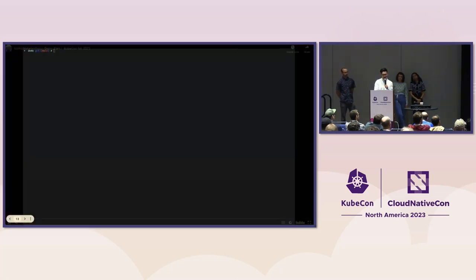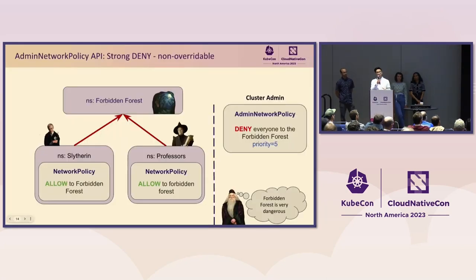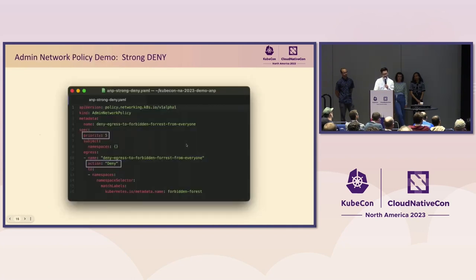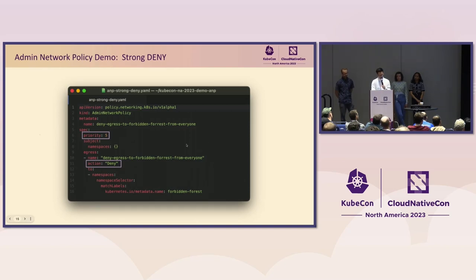In addition to strong allow, we also want to show another use case: strong deny. This is a different storyline — we're now looking at the Forbidden Forest. Dumbledore says the Forbidden Forest is really dangerous, so nobody should be able to talk to it. But people like Draco and the professors have their own network policies trying to talk to it. As an admin, you can lock this down with a strong deny admin network policy — it selects every namespace in the cluster and says nobody should be able to talk to the Forbidden Forest.